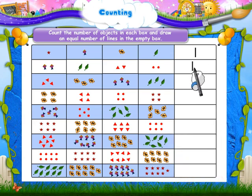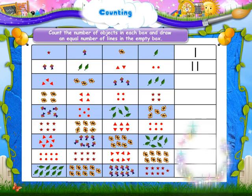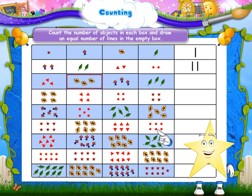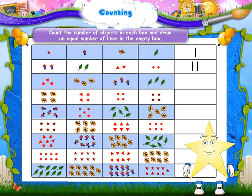Three triangles. Three flowers. Three kites. Three leaves. So draw three lines in the box.